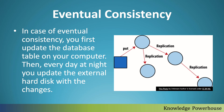In the case of eventual consistency, we first update the database table on our computer, then every night we update the external hard disk with the changes, and every fortnight — once in two weeks — we update Amazon S3. Eventually, after two weeks, all replicas will reach the same consistent state. But if someone reads the record from your computer during those two weeks, it might be different from your external hard disk or Amazon S3. So clients of that system have to deal with this kind of situation.